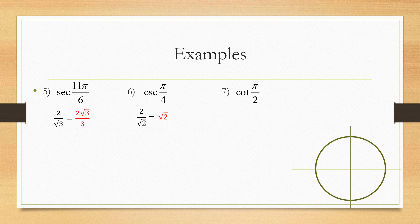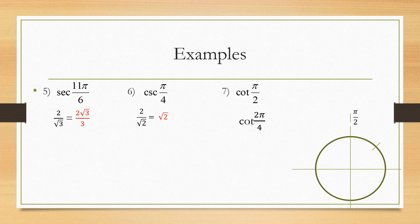Next up: cotangent of pi over two. If you don't know where pi over two is from memory, you can change it to something over four — pi over two is the same as two pi over four. Count one, two: two pi over four is right there on the y-axis, so we cannot draw a triangle. Instead use the coordinates zero, one. Cotangent is x over y, which is zero over one, and that reduces to zero.